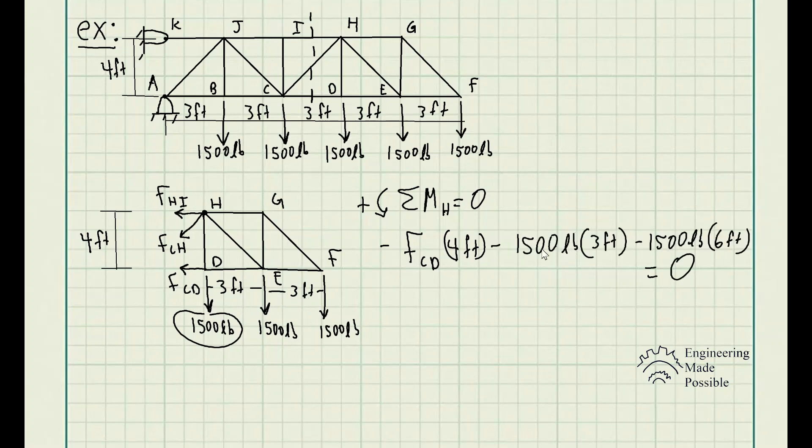So we see that both of these external forces are causing a clockwise rotation. So they're going to be both negative, negative 1,500 pounds. And one of them is the perpendicular distance to point H is three feet here. And the other one is six feet. Three plus three feet. We have six feet, and that's equal to zero.